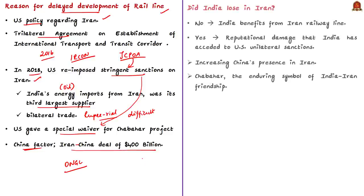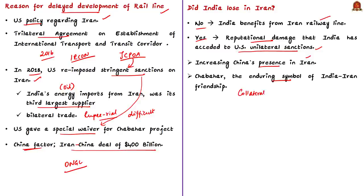The question is: did India lose in Iran? The answer is both yes and no, because India is going to benefit from the Iran railway line no matter who builds it, and India's cargo can reach Central Asia completely bypassing Pakistan. However, there is reputational damage — India has acceded to US unilateral sanctions — and increasing Chinese presence in Iran could make Indian projects further unviable. The biggest worry is that Chabahar port, the enduring symbol of India-Iran friendship, could also become collateral damage in a larger proxy war between the US and China.